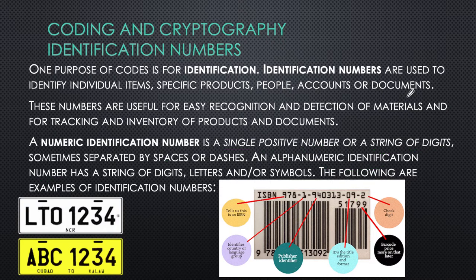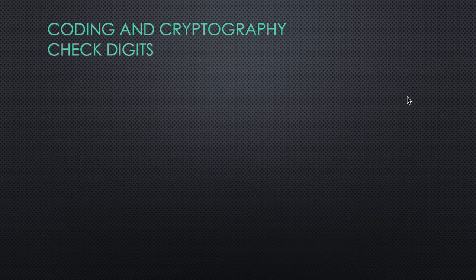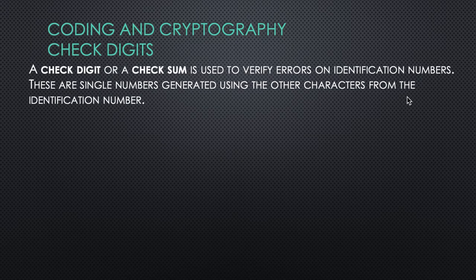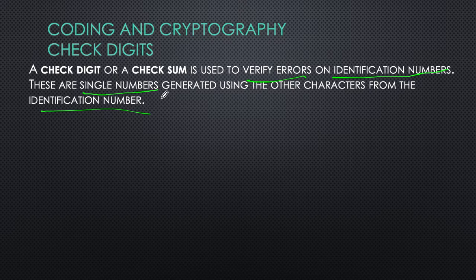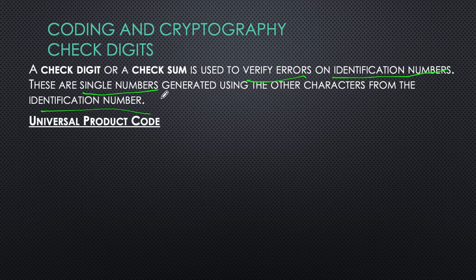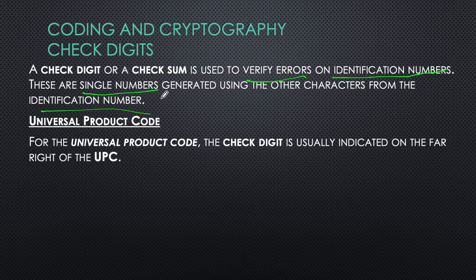A check digit, or checksum, is used to verify errors on identification numbers. These are single numbers generated using the other characters from the identification number. One particular example we're going to show here is how to verify or check if a code is valid — specifically the Universal Product Code, or UPC. From now on, every time I say UPC, it refers to the Universal Product Code.